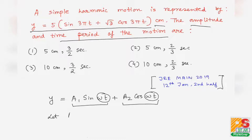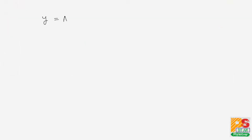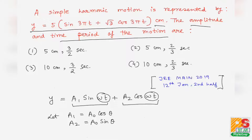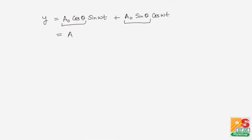Let a1 = a0·cosθ and a2 = a0·sinθ. Putting these values into the equation, it becomes y = a0·cosθ·sin(ωt) + a0·sinθ·cos(ωt), where the first term corresponds to a1 and the second to a2. Taking a0 common gives sin(ωt)·cosθ + cos(ωt)·sinθ.